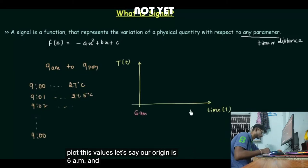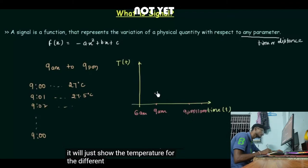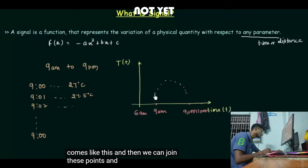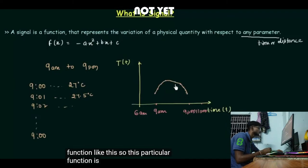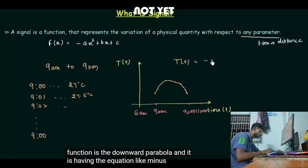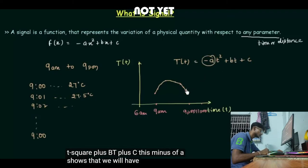Let's say our origin is 6 a.m., this point is 11 p.m., this is 9 a.m., and this is 9 p.m. We plot the temperature values for different times and join those points to get our function — a downward parabola with equation minus at² plus bt plus c. The minus a term indicates a downward parabola.